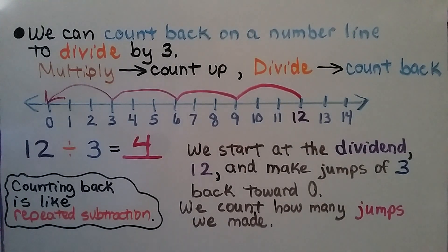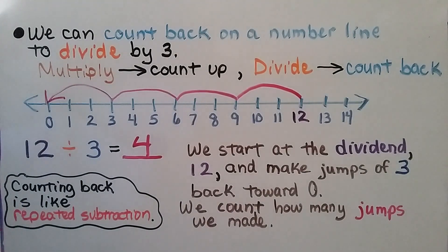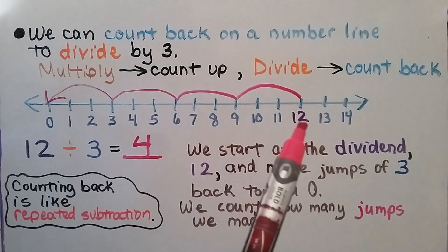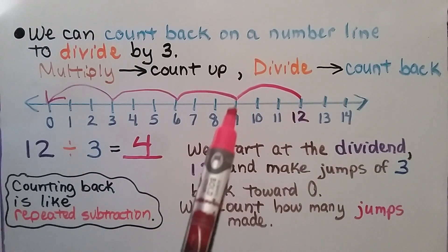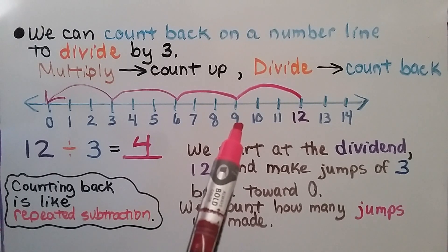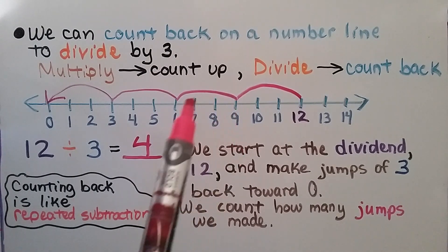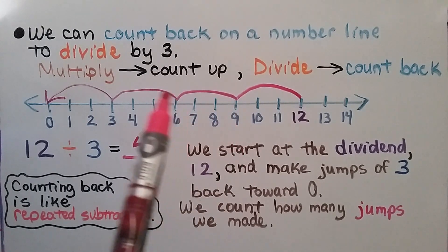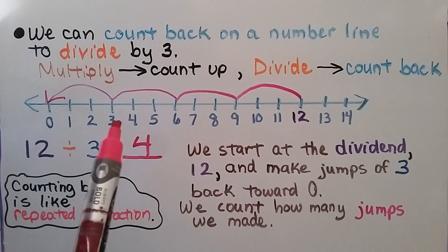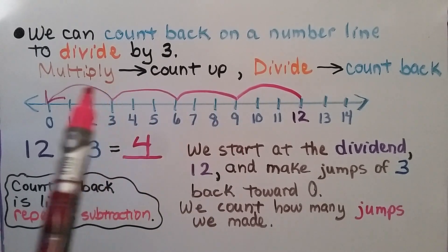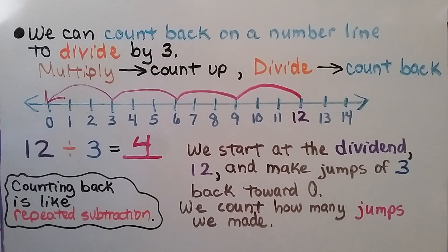Counting back is like repeated subtraction. We were at 12, and we took away 3. Now we're at 9. We take away 3 more, we're at 6. We take away 3 more, we're at 3. We take away 3 more, we're at 0. It's like repeated subtraction.